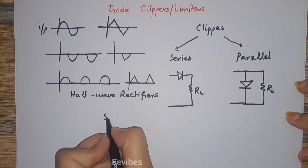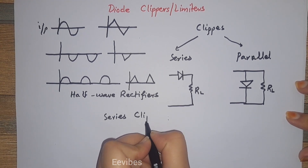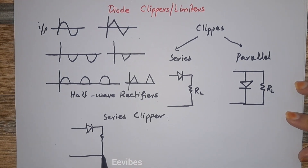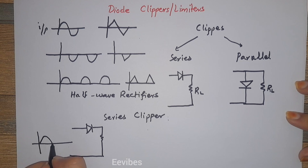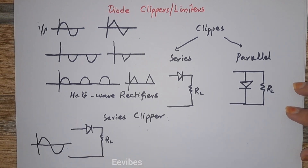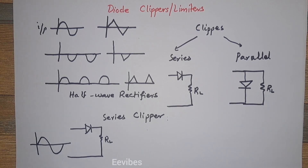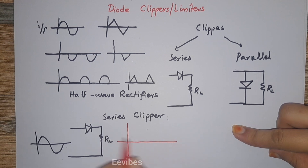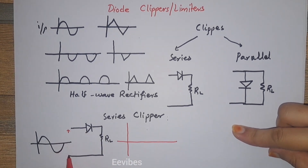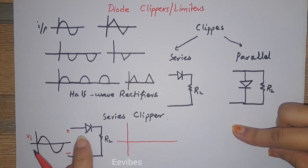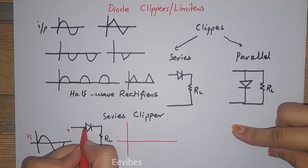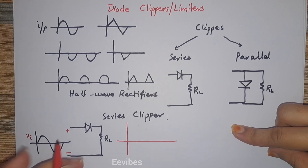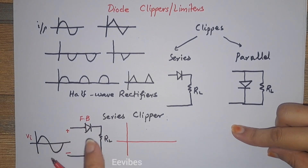The simplest series clipper circuit is shown here, and we will see how the output voltage waveform can be drawn for a sinusoidal signal. If you look at the direction of how the diode is connected — let's assume here is the positive cycle of the input voltage waveform — Vi is coming at the anode terminal. Since the positive potential is present at the anode terminal while the cathode is connected through the load to the ground terminal, this diode will be forward biased.